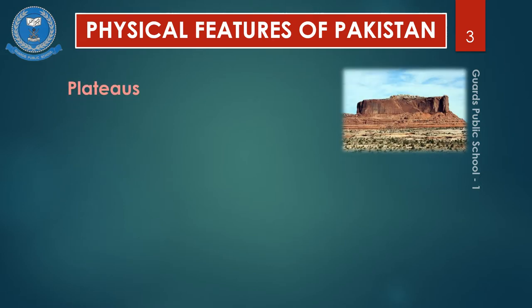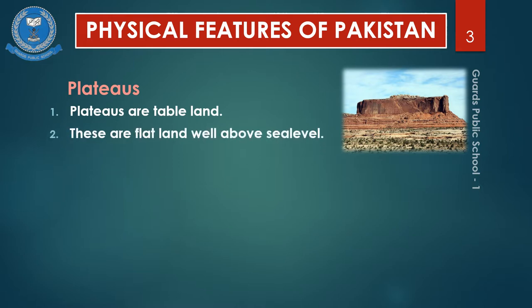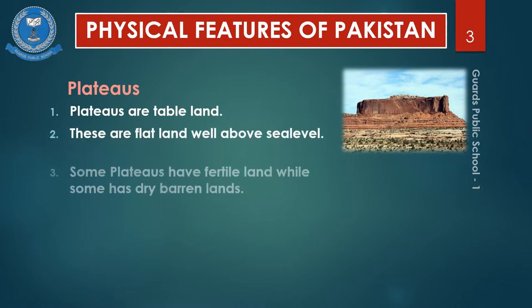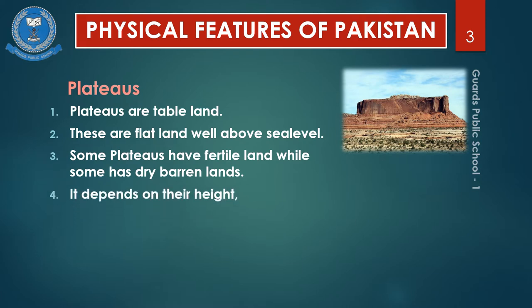Plateaus are an important physical feature of the earth. Plateaus are table land — flat land well above sea level. Some plateaus have fertile land while some have dry, barren lands. It depends on their height and amount of rainfall. Plateaus are elevated above sea level and are flat on top.